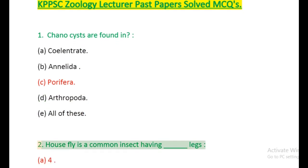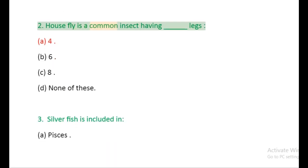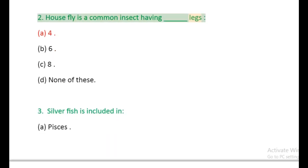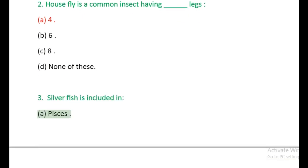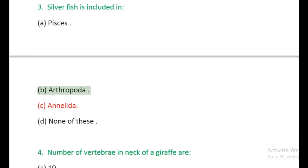Question 2: Housefly is a common insect having legs: (a) 4, (b) 6, (c) 8, (d) None of these. Question 3: Silverfish is included in: (a) Pisces, (b) Arthropoda, (c) Annelida, (d) None of these.